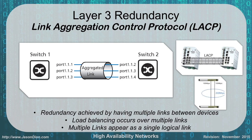LACP, the Link Aggregation Control Protocol, was discussed back in switching — it aggregates ports together to give us more bandwidth between devices. We get redundancy because if one of those links goes down — say we have three links and port 1.2 goes down — we only lose one of the three links, so bandwidth might drop from 300 Mbps to 200 Mbps: a little slower, but it still works. LACP allows load balancing and provides redundancy, and all those links appear as a single logical link.